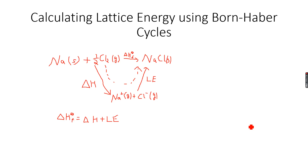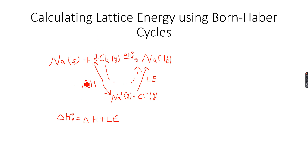Despite the route taken by the reaction, the total energy change will remain the same. We have derived this equation, and what we do now is use a Born-Haber cycle for delta H, because delta H is not a single step — it is the culmination of many different steps added together giving us one delta H. So that's why instead of a Hess cycle, we use a Born-Haber cycle.